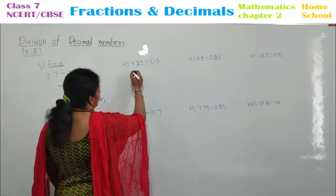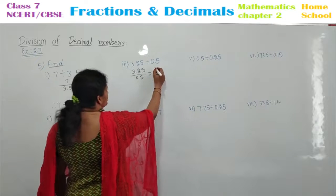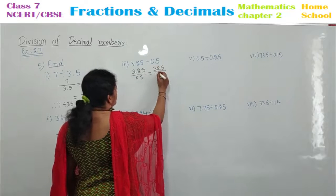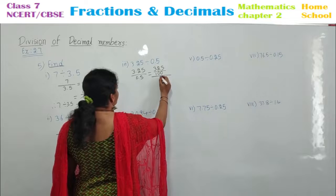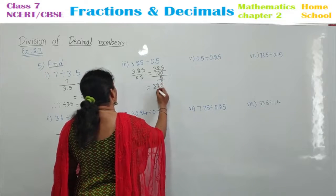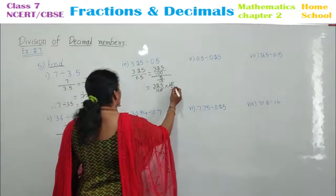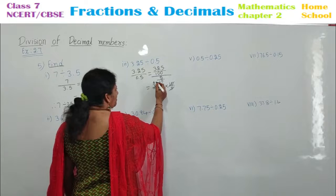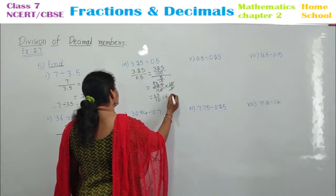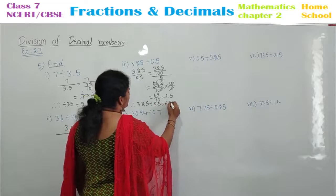See the third one: 3.25 by 0.5. Convert this decimal: 325 — you have 2 decimal places, so 100. Divided by 0.5 means 5 by 10. Bring to the numerator — do the reciprocal: 325 by 100 into 10 by 5. The 10s cancel. 5 sixes are 30, 5 fives are 25 — that gives 65 by 10. Rewrite as a decimal: 6.5 is your answer. Therefore, 3.25 divided by 0.5 is equal to 6.5.